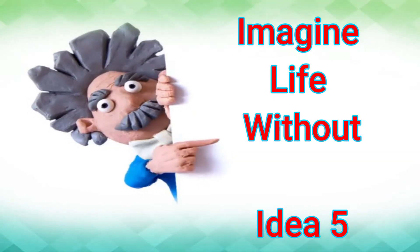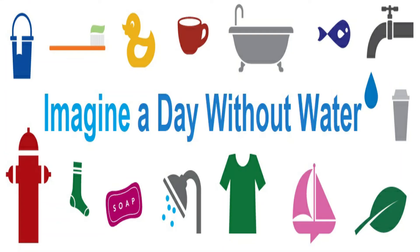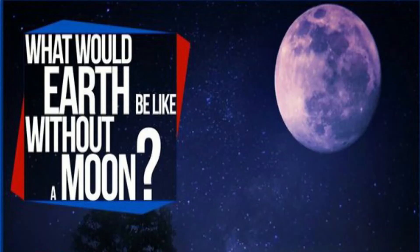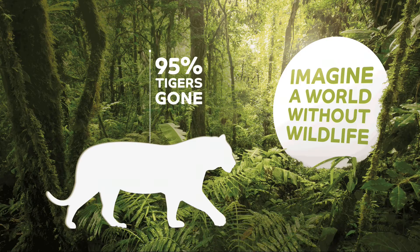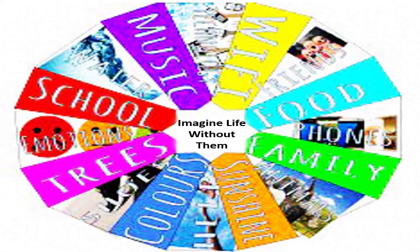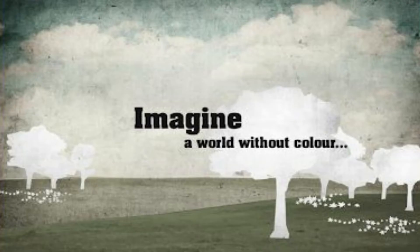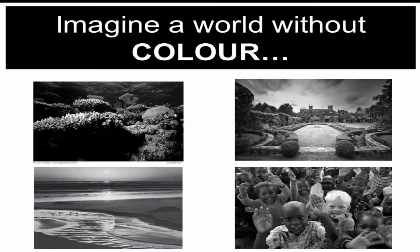Idea number five is imagine life without. Life without technology, water, oxygen, plants, sun, moon, animals, light, sound, etc. Choose any one of these topics, or any other you may think of, and it would be great fun to discuss life without science with students. This topic revolves around the importance of science in our daily life. Topics like life without colors or living on a black and white planet can prompt some very interesting answers from students.